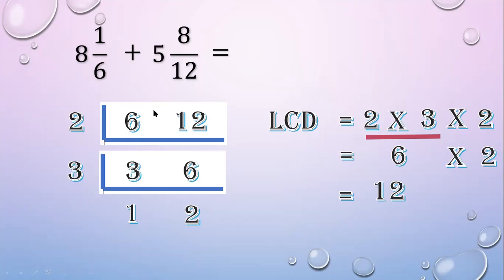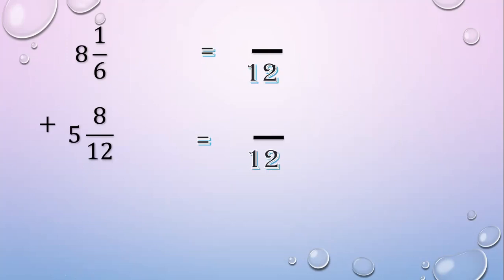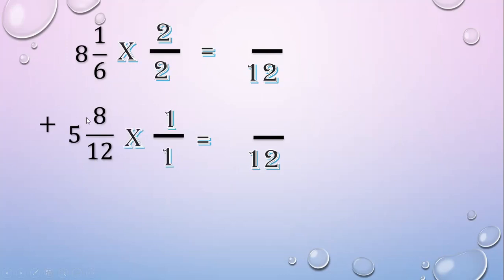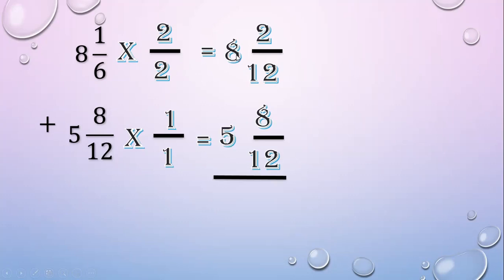Then change the denominator to 12. Think of a number to multiply 6 to make it 12 — that is 2. So multiply 2 over 2. For 12 to make it 12, multiply 1 over 1. Then 1 times 2 equals 2; 8 times 1 equals 8. Add the whole numbers: 8 plus 5 equals 13. Add the numerators: 2 plus 8 equals 10. Copy the denominator: 12.